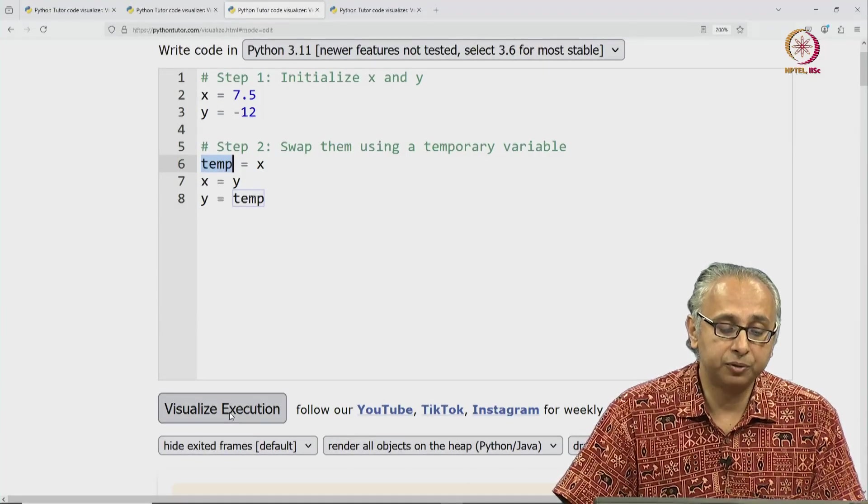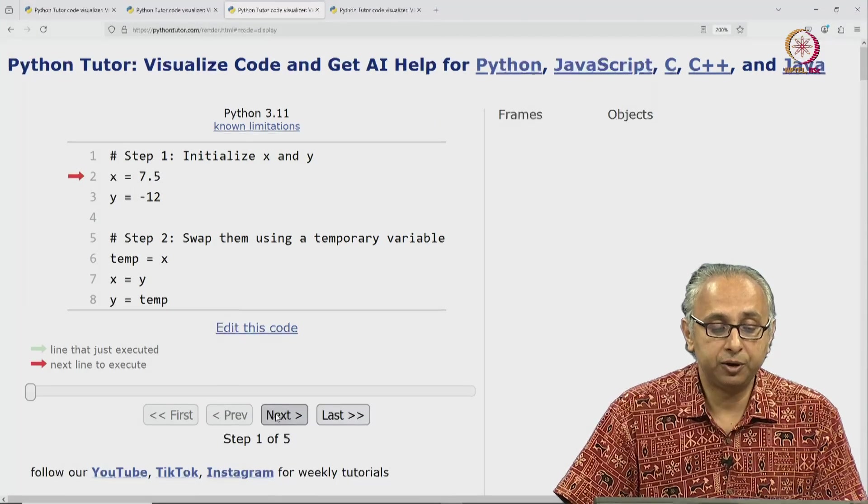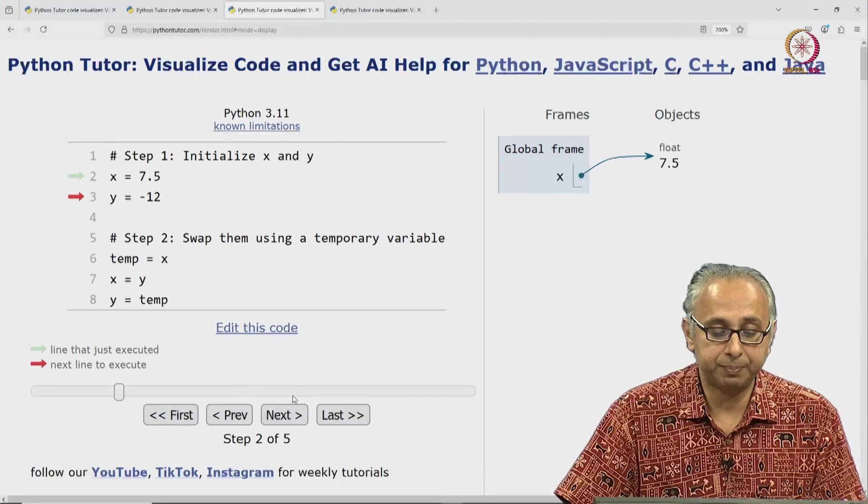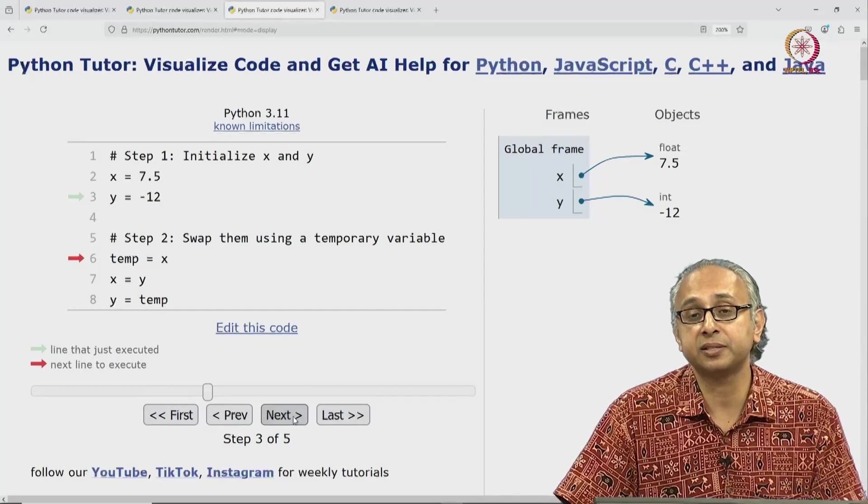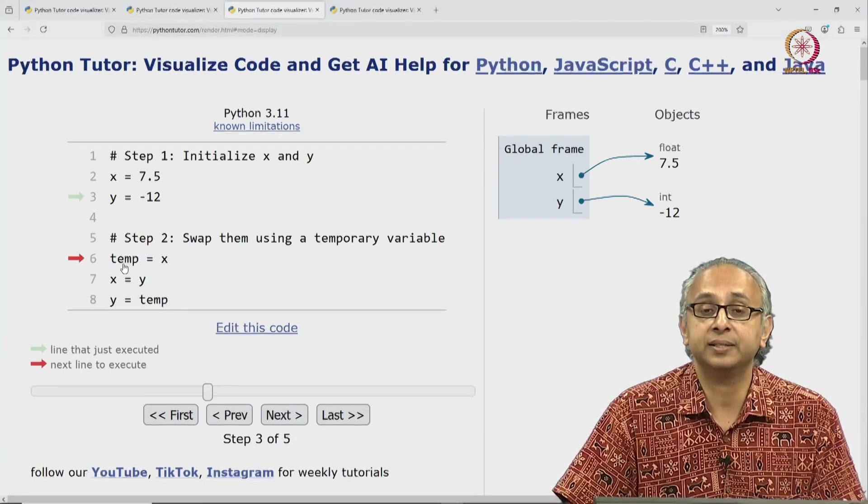Let's see how this code visualizes. We click on next and we have set up our x and our y. x is the float, y is the int. Now we're ready to do line 6.